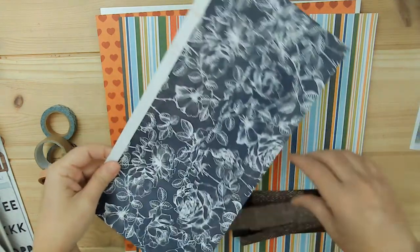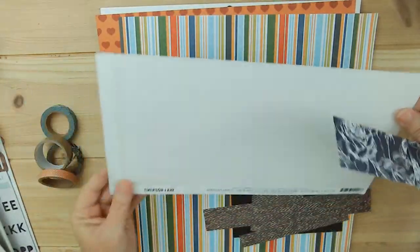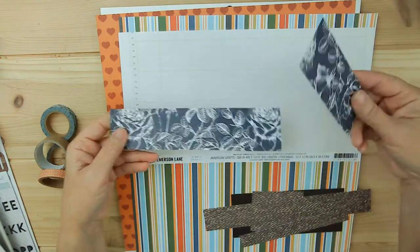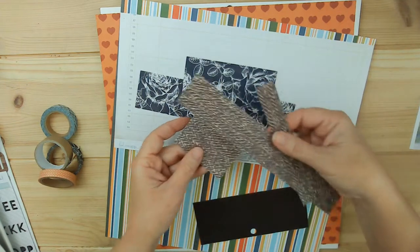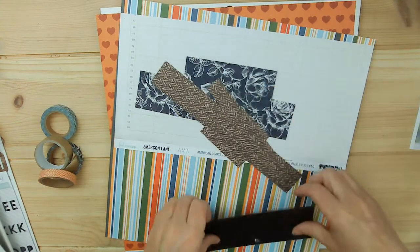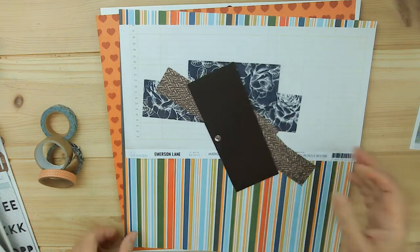And then I have some pieces left over of this, what was it called? Emerson Lake from Heidi Swap. I have a couple pieces left here, a couple pieces of that tweed paper, and then this is the dark brown six by six pad.